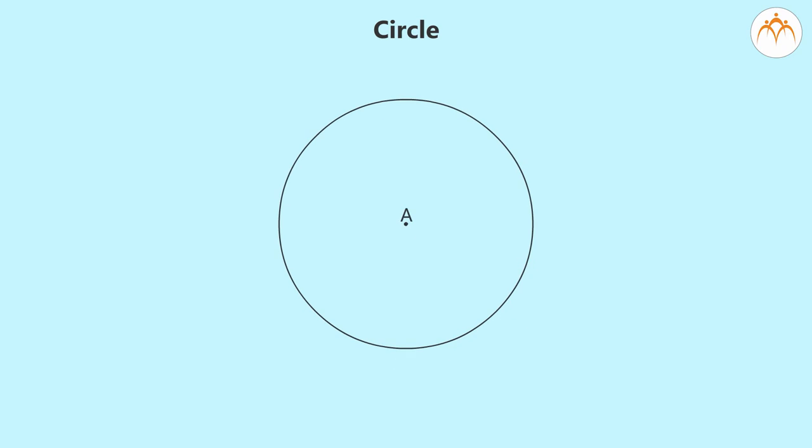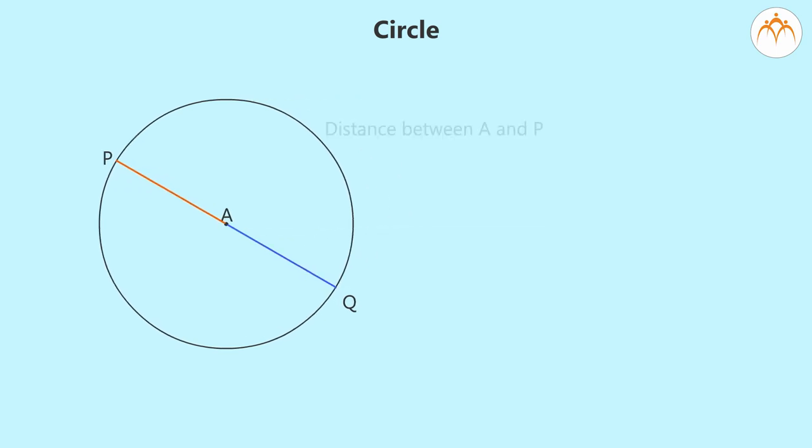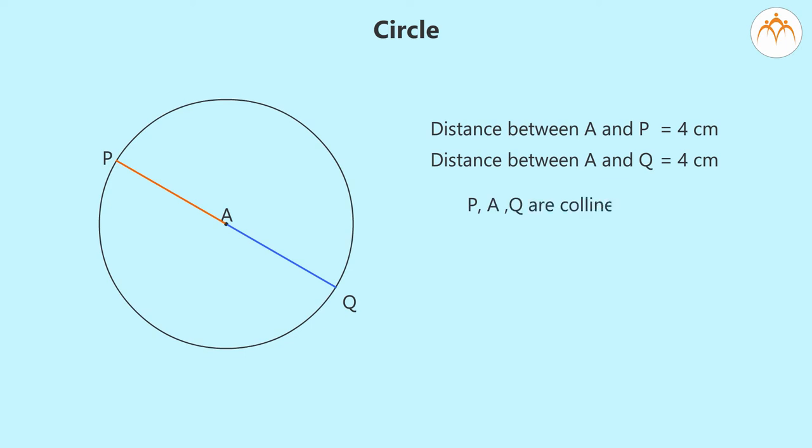If a chord of circle passes through center of the circle, we call it diameter of the circle. Here, we know that distance between A and P as well as distance between A and Q is 4 cm. Also, as P, A, Q are collinear points, distance between P and Q is 4 plus 4 equal to 8 cm since they are on opposite sides of A. Hence, length of diameter PQ is 8 cm.